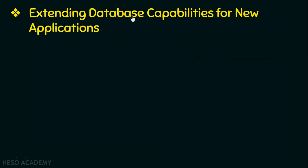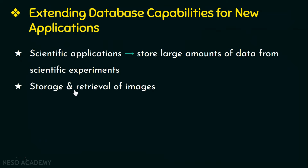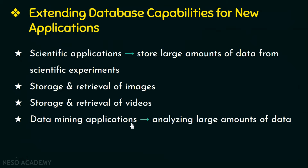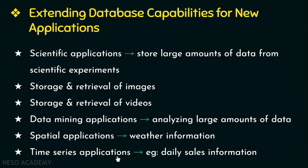Next, let us discuss extending database capabilities for new applications. Some concepts of traditional database applications were used by developers of other types of applications. Examples include scientific applications to store large amounts of data or results from scientific experiments, storage and retrieval of images like X-rays and MRIs, storage and retrieval of videos, data mining applications to analyze large amounts of data, and spatial applications that store geographic data like weather information.